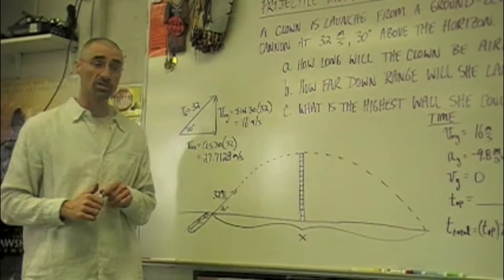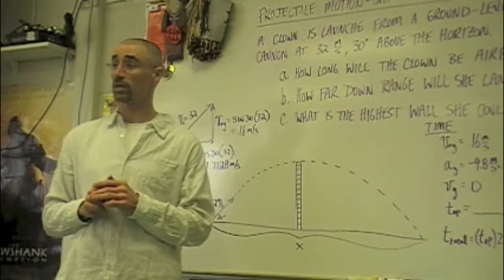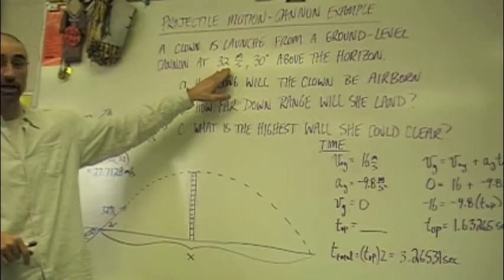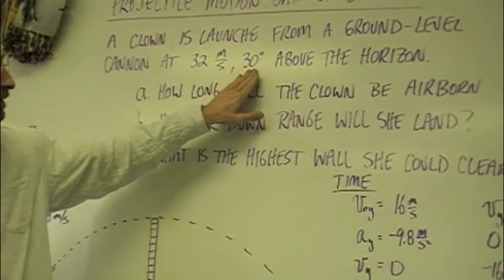This is kind of a classic ballistics. If you're shooting at people with a cannon you got to understand this stuff if you want to hit them. But to keep it more benign we're going to shoot a clown out of a cannon, a ground level cannon at 32 meters per second, which is about 70 miles an hour, and we're going to shoot it 30 degrees above the horizon.